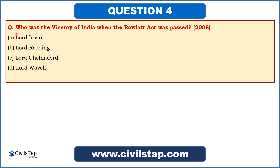This question came in the prelims of 2008: 'Who was the Viceroy of India when the Rowlett Act was passed?' Options are: Lord Irwin, Lord Reading, Lord Chelmsford, and Lord Wavell. You have two approaches. First, recall key events linked to each viceroy. Second, the Rowlett Act came in 1919, and the Act of 1919 was named Montague-Chelmsford Reforms because Montague was Secretary of State and Chelmsford was Viceroy at that time. So we can relate that Lord Chelmsford was Viceroy when the Rowlett Act was passed — answer is C.